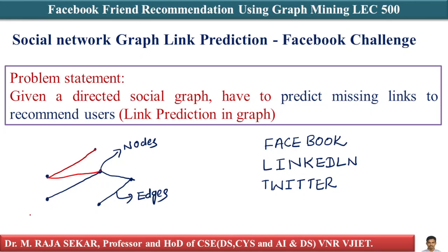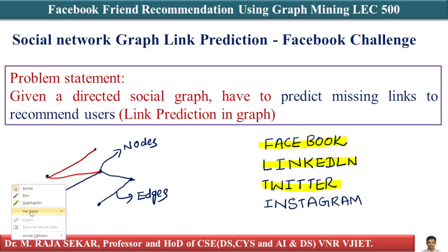Graph is a very important mathematical structure in computer science and applied maths. The problem we are trying to solve: Facebook has given us a dataset — they have open-sourced it, though it seems to be Instagram-type data. The task is to predict the missing links, which is used to recommend users. That is the link prediction problem.